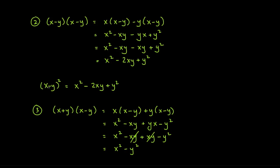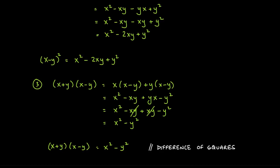So the recipe for (x − y)² is: square the first term, minus double the product of the two terms, plus square the last term — giving x² − 2xy + y². Please memorize these formulas in words — know the recipe. Just knowing the formula without understanding what it means is basically useless.